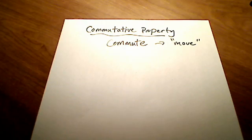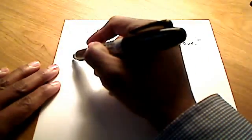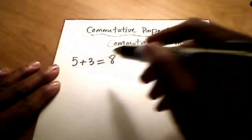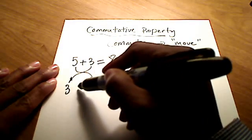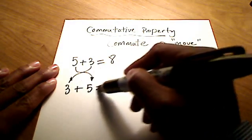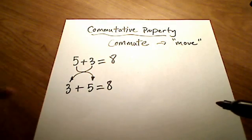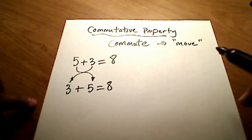So the commutative property works for two different operations here. If you saw a five plus three, obviously the answer to that is eight, but could I swap these two numbers around, could I move them, in other words, and still come up with the exact same answer? Yeah, no problem because three plus five is still eight. So all I did was I commuted these numbers, I moved them, and I still got the same result.